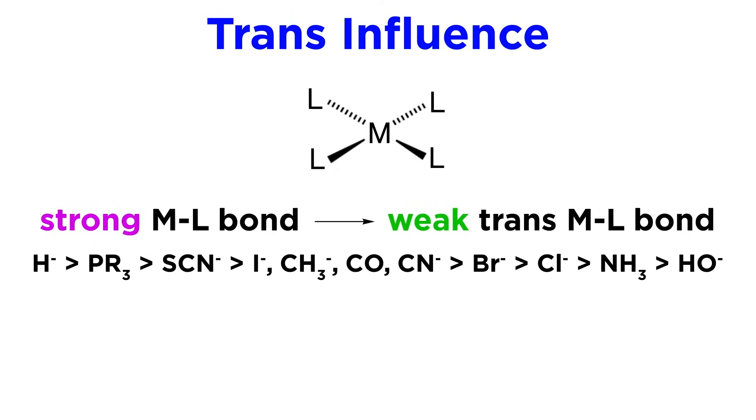Here is a list depicting the relative strengths of the trans-influence. Hydrides are very strong, then phosphines, then thiocyanates, then relatively equal are iodide, methanide, carbonyl, and cyanide, followed by bromide, chloride, amine, and hydroxyl. If two ligands are opposite one another, the one that is higher up on this chart will be making the stronger bond to the metal.